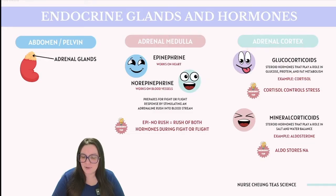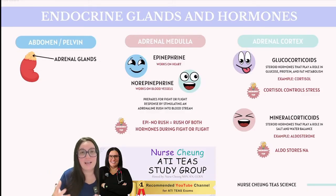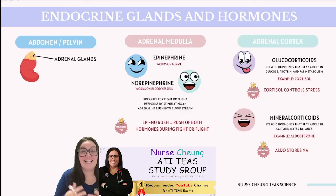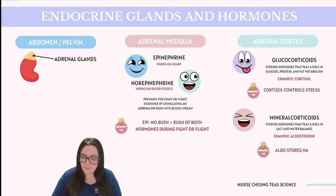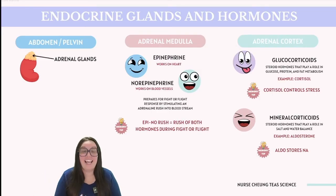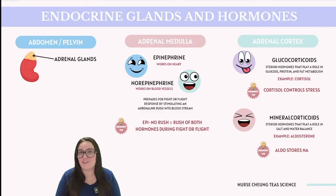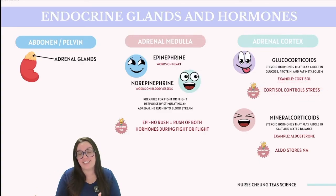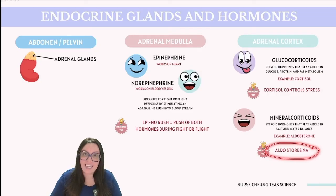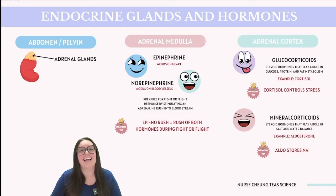Moving on to the adrenal cortex, it produces glucocorticosteroids, with cortisol being its primary example. Cortisol helps increase blood glucose levels and plays significant roles in managing stress and reducing inflammation. Additionally, the adrenal cortex secretes mineralocorticosteroids, such as aldosterone, which is essential for balancing electrolytes in the body. Aldosterone helps regulate sodium reabsorption and potassium excretion in the nephrons of the kidney. Cortisol controls stress, and for aldosterone, the aldo stands for aldosterone because it stores sodium inside our body.